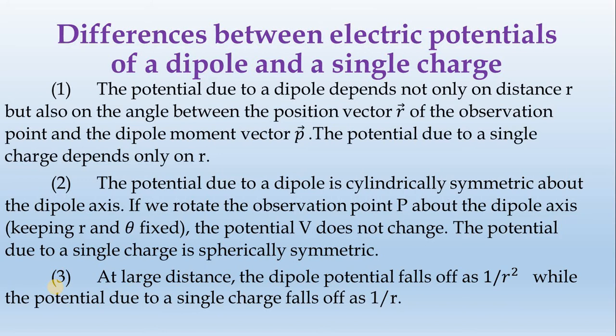The potential due to the dipole is symmetric — it is cylindrically symmetric. If we rotate the observation point P about the dipole axis, the observation point is where the potential is measured. If you rotate the point, the potential does not change.